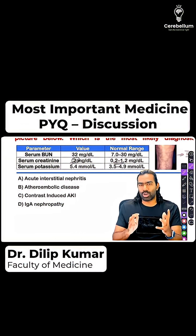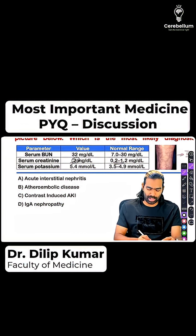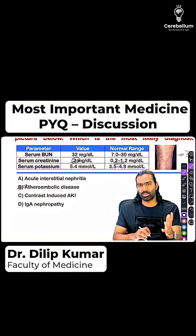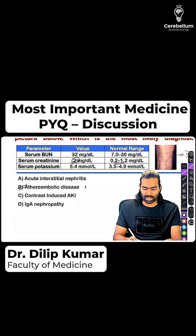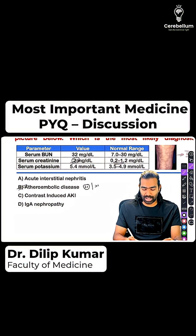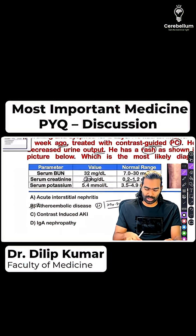In this context, I'm going to make a diagnosis of atheroembolic disease, because atheroembolic disease is the one that presents in a symptomatic fashion. It's going to have a late AKI after day 4 to day 7, which aligns with our diagnosis.